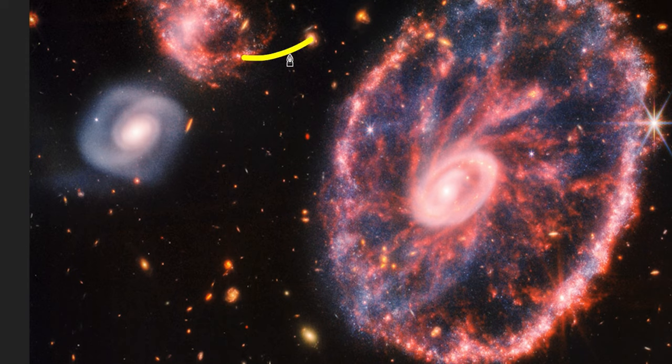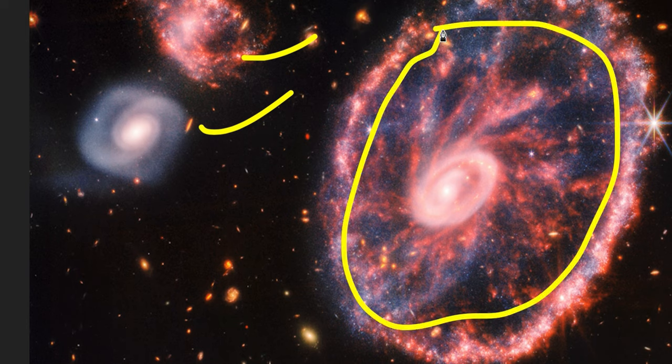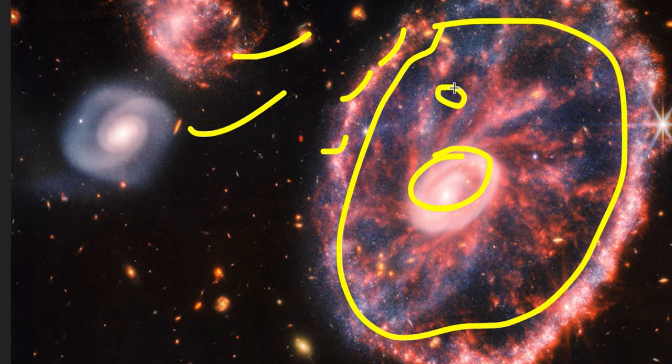The large galaxy on the right, with two smaller companion galaxies to the left, resembles a speckled wheel with an oval outer ring and a small off-center inner ring. The outer ring contains pink plumes like wheel spokes with dusty blue regions in between.